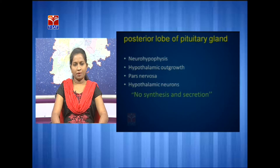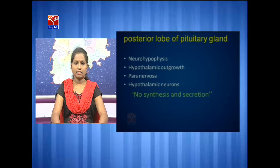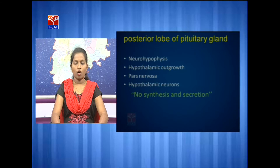The posterior lobe of the pituitary gland is also called neurohypophysis — neurohypophysis is the hypothalamic outgrowth having pars nervosa. This posterior lobe receives hormones through hypothalamic neurons; the axons of neurons carry hormones into the posterior lobe. The key point is that the posterior lobe never synthesizes, secretes, or produces hormones. Its only function is to store and regulate the hormones to the target organ.